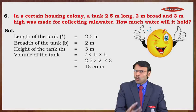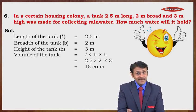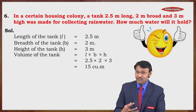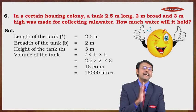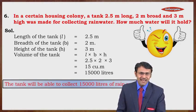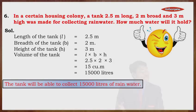We are finding the quantity of water, which is generally calculated in liters. So we convert cubic meters to liters using the formula: 1 cubic meter = 1000 liters. Therefore, 15 × 1000 = 15,000 liters. The tank is able to collect 15,000 liters of rain water.